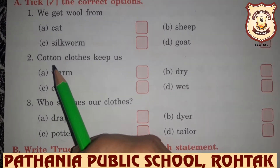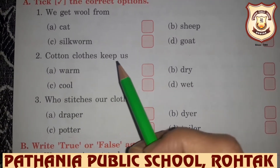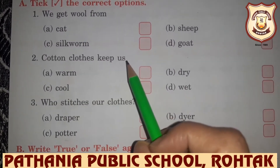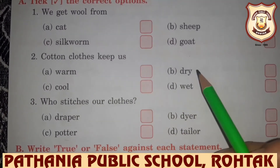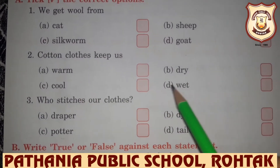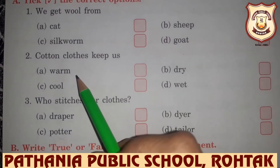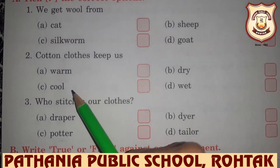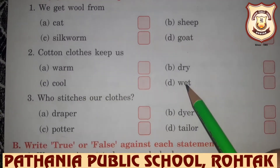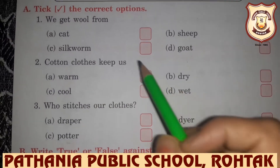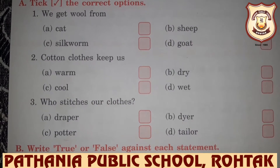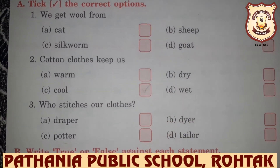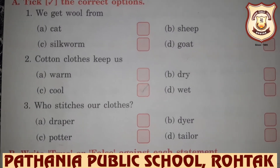Question number 2: Cotton clothes keep us — warm, dry, cool, or wet? Warm means hot, dry means sukhah, cool means thanda, wet means gila. Cotton clothes keep us cool. Tick on cool.